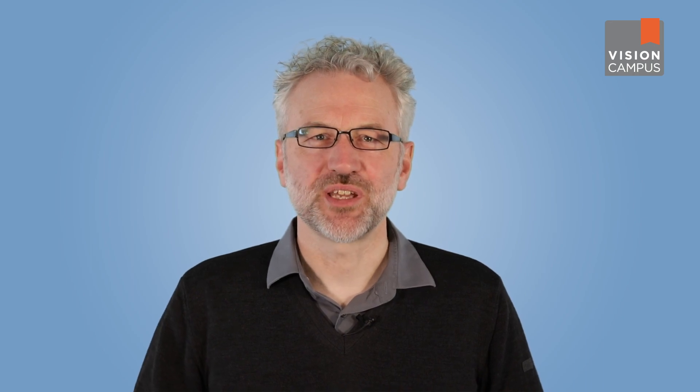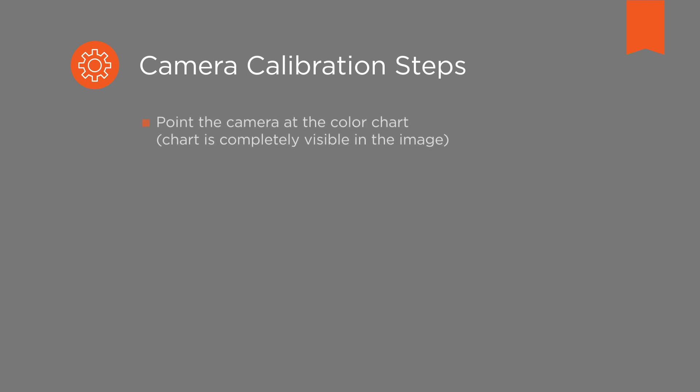Let's now have a more detailed look at how to achieve this. We are using the Basler MED ACE camera to illustrate how such a color calibration via software can work. If no suitable light source preset is available, your camera can be calibrated in just a few seconds — not hours — using the Basler color calibrator software. The first step is to point the camera at the color chart so that the chart is completely visible in the image. The software then starts to adjust the brightness to optimal levels.